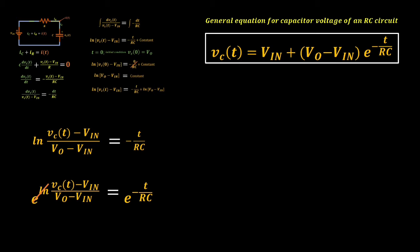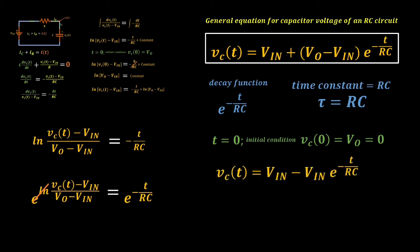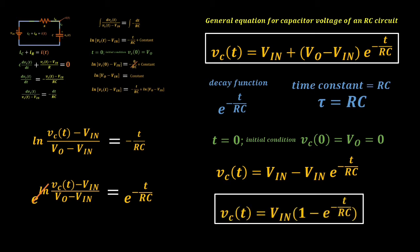Now, in the formula, you will see a term E raised to the negative T all over RC. It is a decay function with respect to the ratio of T all over RC, with RC as our time constant factor. We will call now the product of RC as time constant, denoted by the symbol tau. If our initial condition V sub O is equal to zero at time equal to zero, then our general formula will be reduced to the voltage across the capacitor equivalent to the voltage input multiplied with 1 minus E to the negative T all over RC, which is a more familiar formula that we know.